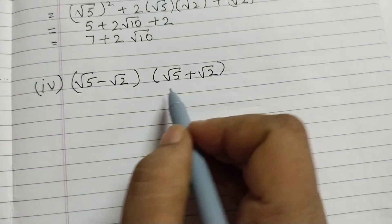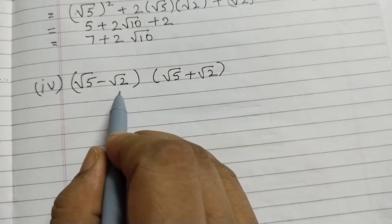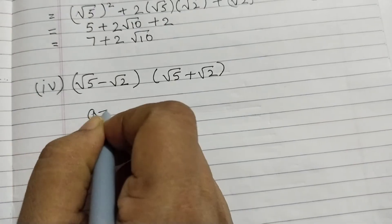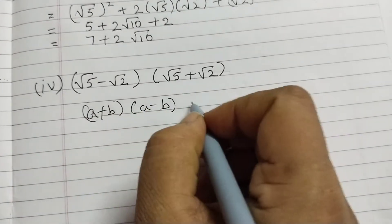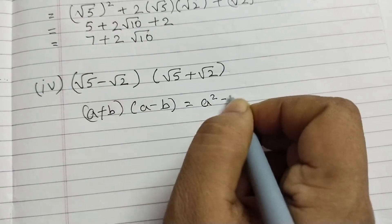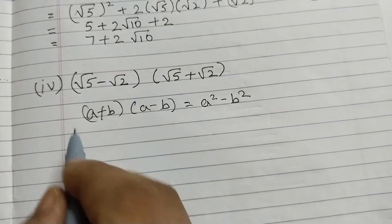And the last one, root 5 minus root 2 into root 5 plus root 2. So root 5, root 5, root 2, root 2. We can use the identity a plus b into a minus b equals a squared minus b squared.